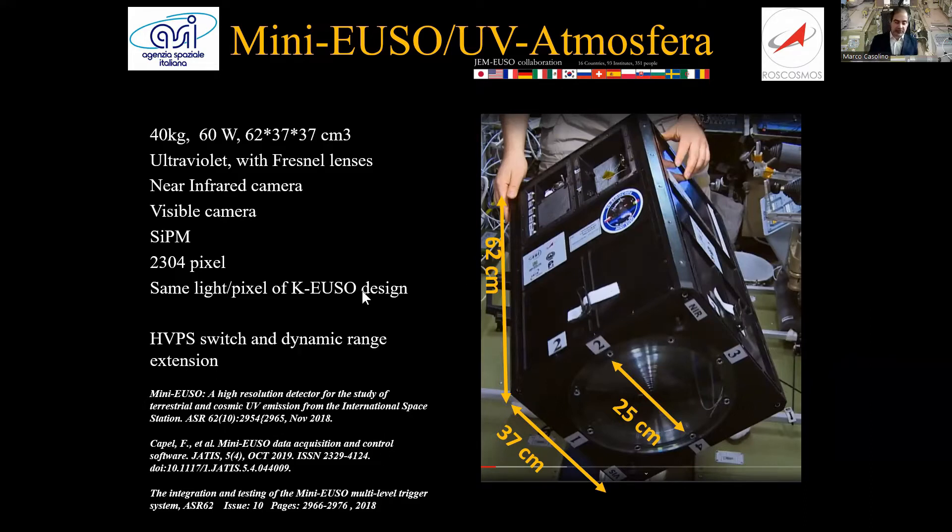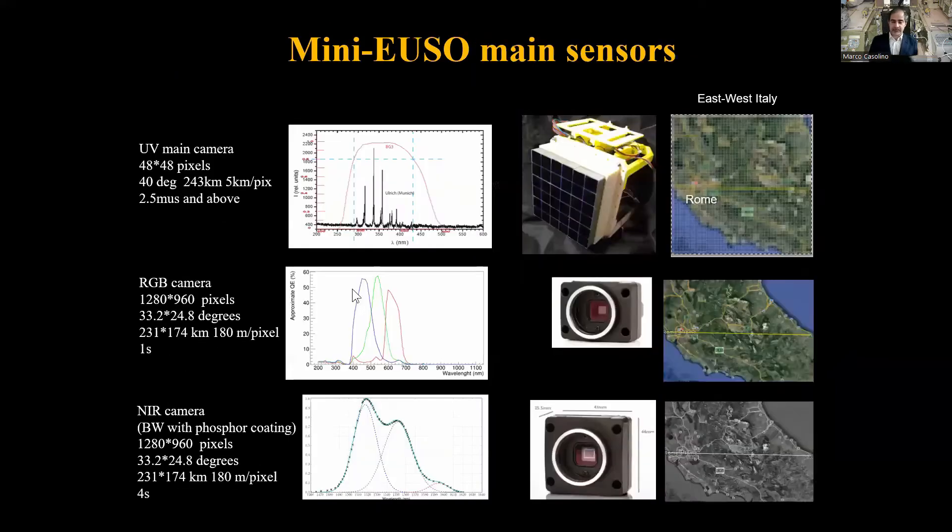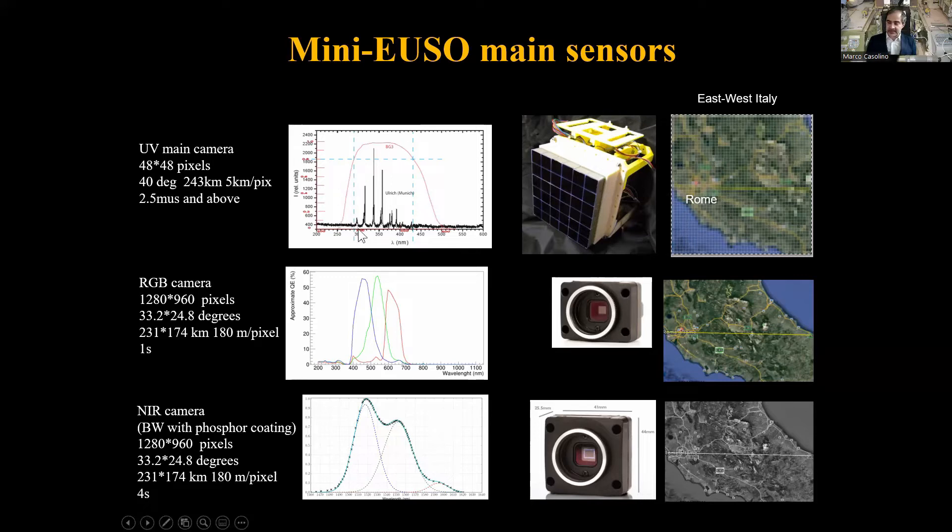There are three main sensors. The main one is the PDM, the Photo Detector Module, which is 2,304 pixels of multi-anode photomultipliers. This has a relatively large field of view of 300 kilometers. There is a BG3 filter that captures the light emitted in the nitrogen excitation lines typical of extensive air showers. Then there are two ancillary cameras: one RGB, a classic commercial off-the-shelf camera, and one near-infrared camera with more or less the same field of view.